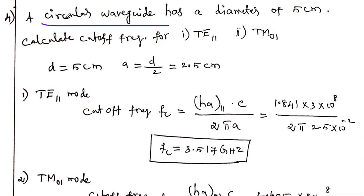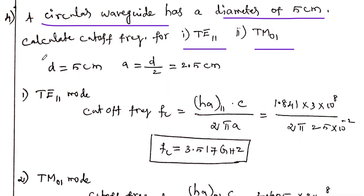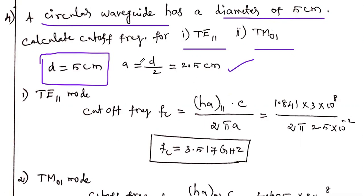First question: a circular waveguide has a diameter of 5 centimeters. Calculate the cutoff frequency for TE11 mode and TM01 mode. The given data is diameter = 5 cm, so the radius A is half of the diameter: A = D/2 = 2.5 centimeters.